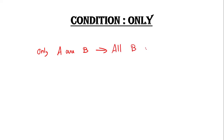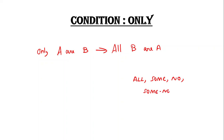I am using rules. I have learned 4 rules: all, some, no, and some-not. All is A, B, 3 and all is V, R, I. We can't do that combination.